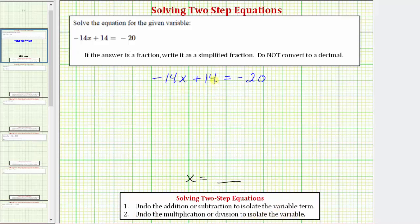So the first step in this equation is to undo plus 14 by performing the opposite or inverse operation. To undo 14, we will subtract 14 on both sides of the equation. Whatever operation we perform to one side of the equation, we must perform to the other in order to maintain equality.